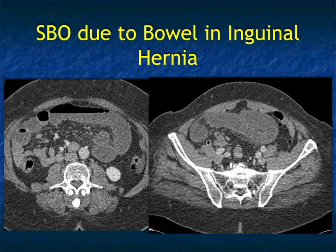Hernias were number one in the 1900s, but it's now number two and happens infrequently. Hernias, particularly strangulated hernias, are more common in older patients, so that's going to be a challenge. The key is to recognize and detect early, so intervention can be done before the patient gets ischemic bowel.